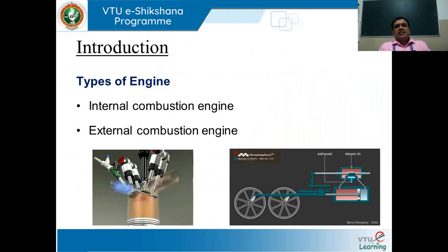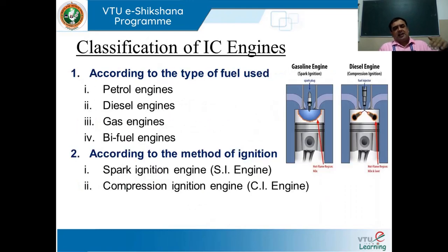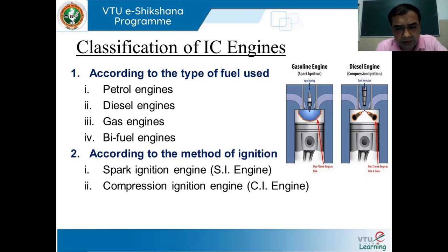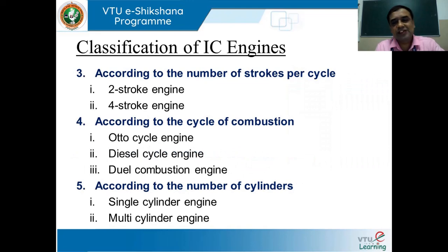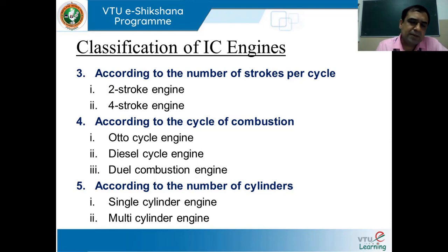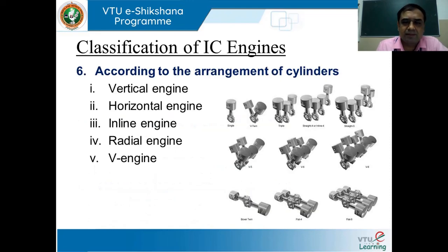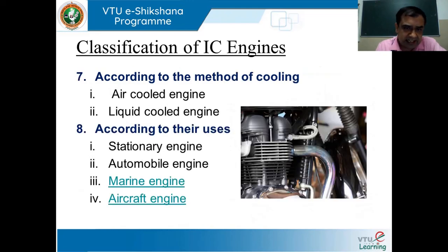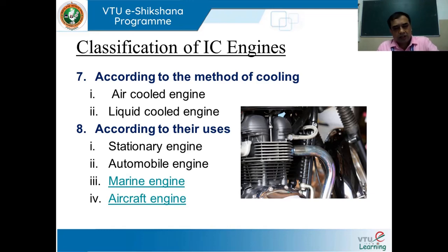So in these slides, we can get to know a variety of IC engines. To summarize: classification is based on type of fuel used, method of ignition, number of strokes executed per cycle, cycle of combustion, number of cylinders, arrangement of cylinders, method of cooling, and according to their uses.